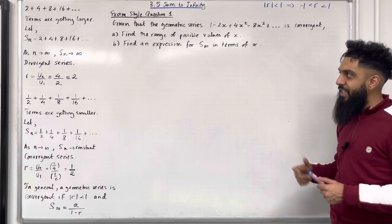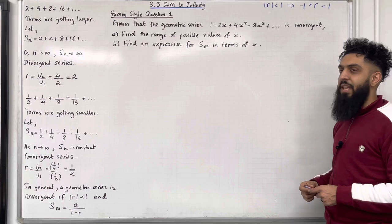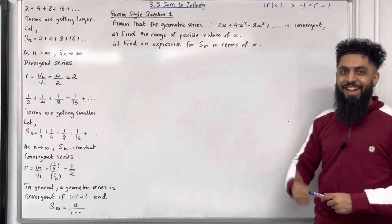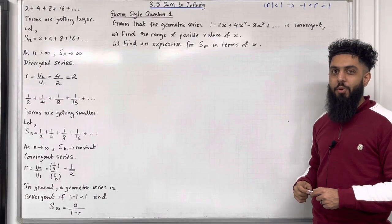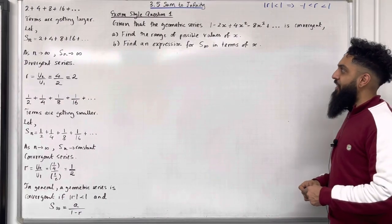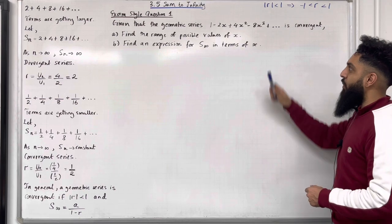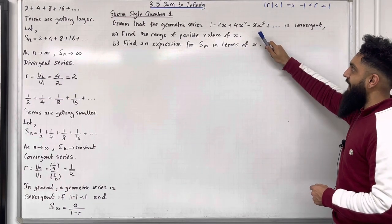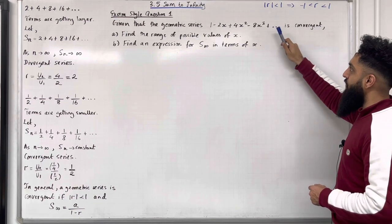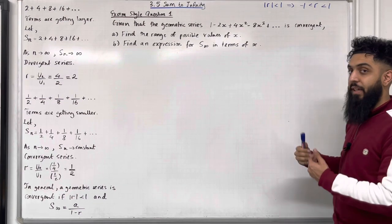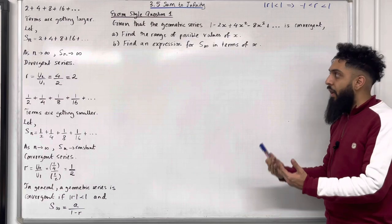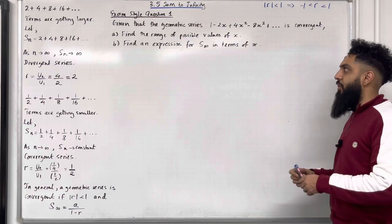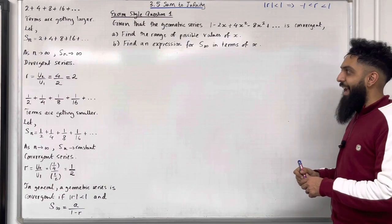I'll be implementing these key facts within exam style questions. Here is exam style question 1. Given that the geometric series 1 − 2x + 4x² − 8x³ + ... is convergent, part A: find the range of possible values of x.